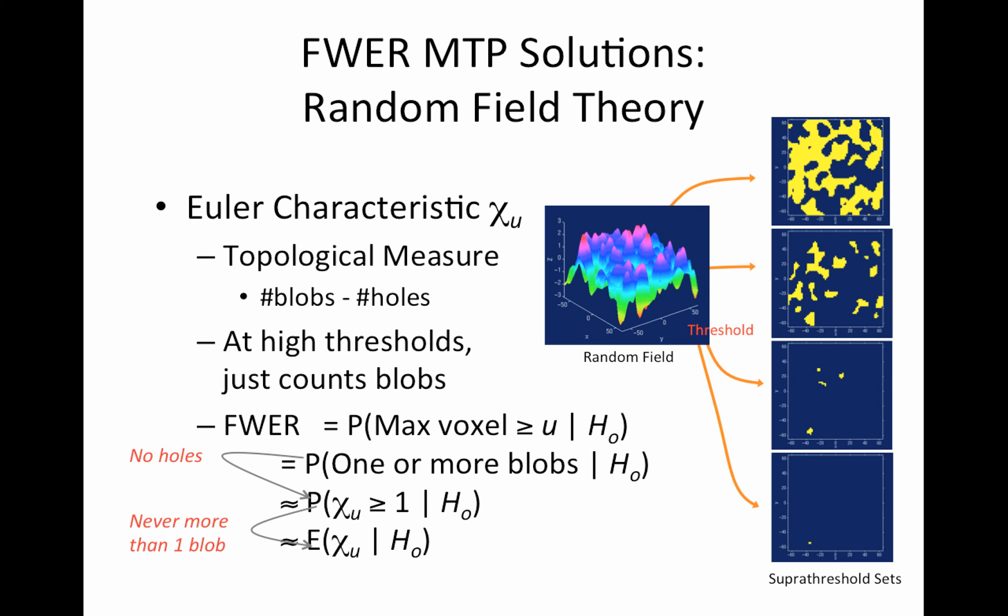And I would like to revisit those assumptions later. But basically the assumption is that your threshold is high enough. So because of this, and I'll repeat this later, it's really important when you're using random field theory, I wouldn't lower the threshold, lower the cluster forming threshold, for example, than what the software specifies because you might be violating this assumption.